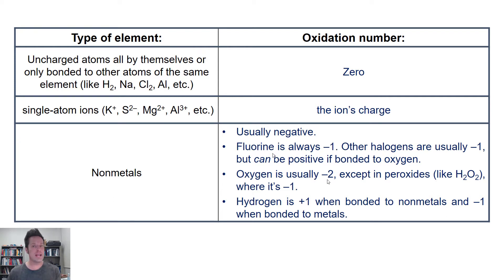Usually, the oxidation number for non-metals is negative. Any time you see fluorine in a formula, this is if you've got multiple atoms in a formula, not fluorine all by itself uncharged like F2. I'm talking about fluorine inside a compound with other elements. Fluorine's oxidation number is always negative one in such compounds.